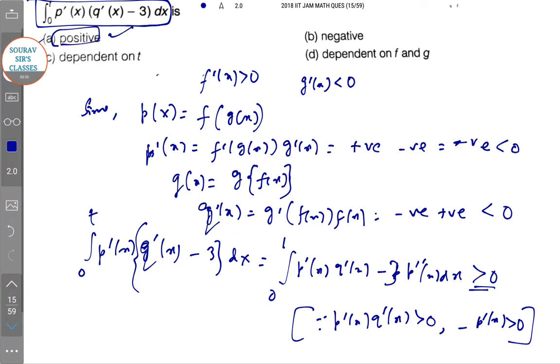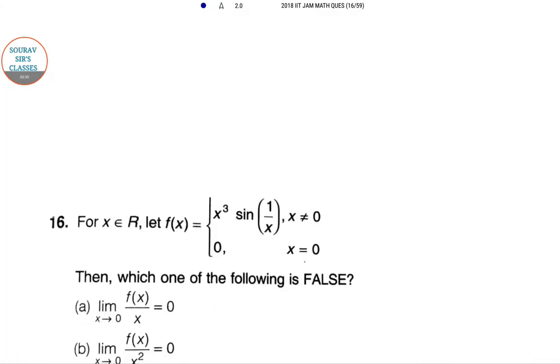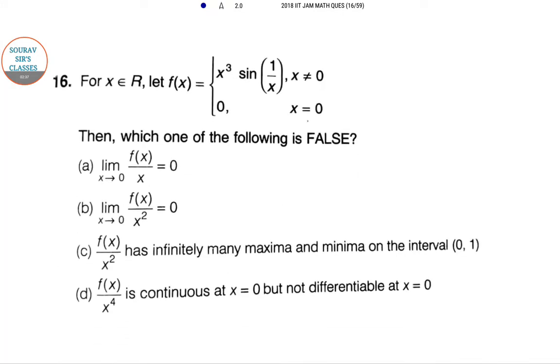Next question. For x ∈ R, let f(x) = x³sin(1/x) for x ≠ 0, and 0 when x = 0. Then which of the following is FALSE? Let's start with the very first one.